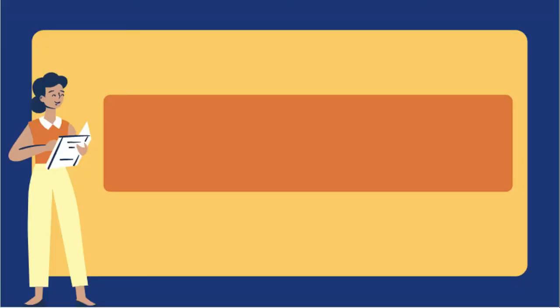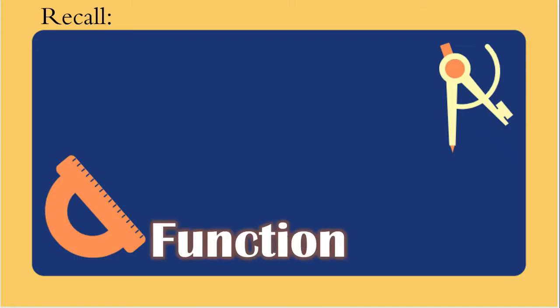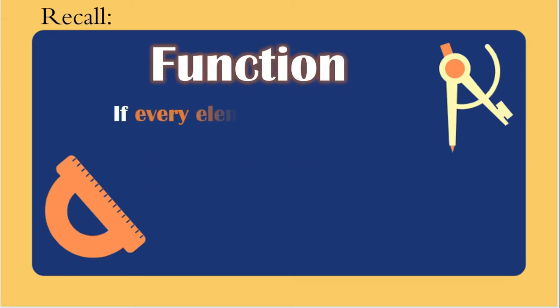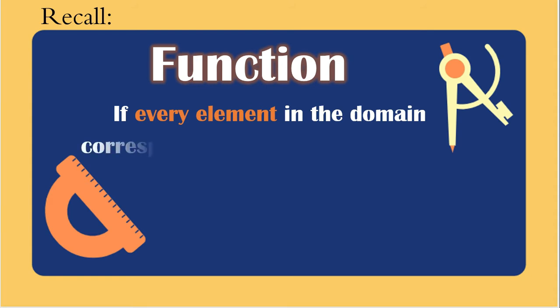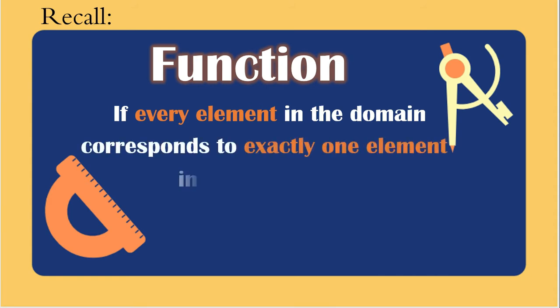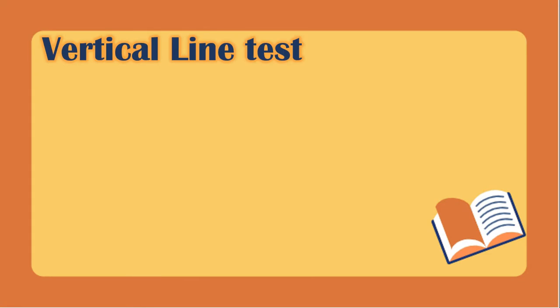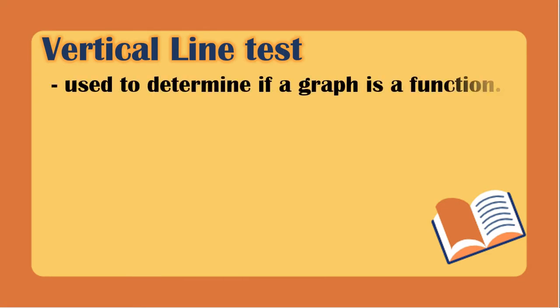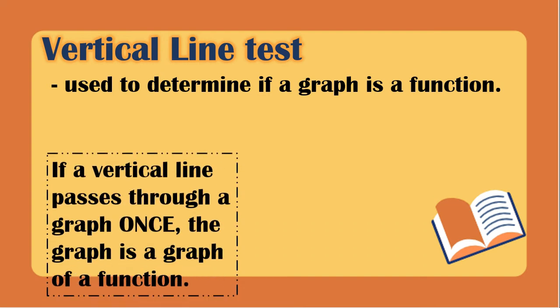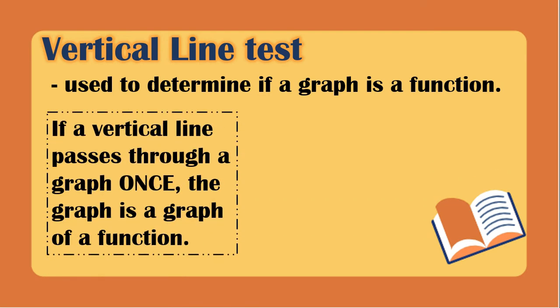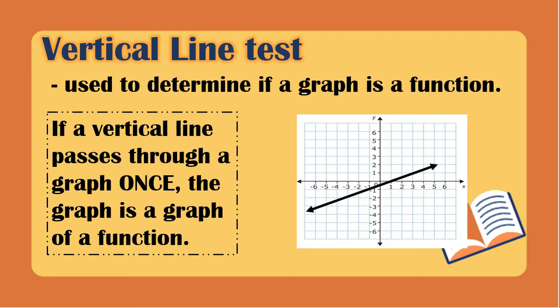In this video lesson we will study further about functions. It is a function if every element in the domain corresponds to exactly one element in the range. We will use the vertical line test to see if the graph is a function or not. If a vertical line passes through a graph once, the graph is a graph of a function.